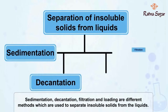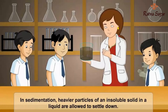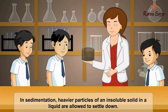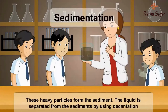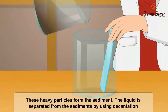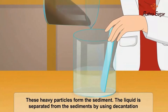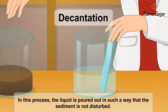Sedimentation, decantation, filtration, and loading are different methods used to separate insoluble solids from liquids. In sedimentation, heavier particles of an insoluble solid in a liquid are allowed to settle down. These heavy particles form the sediment. The liquid is separated from the sediment by using decantation. In this process, the liquid is poured out in such a way that the sediment is not disturbed.